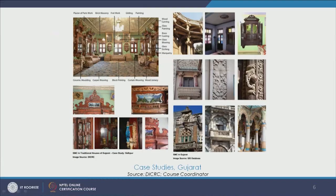Then we saw a few buildings from Gujarat — some space-making crafts and interior architecture examples. We specifically saw one from Sidpur and saw how in this one small space itself there are so many craft forms and techniques employed: plaster of Paris work, brick masonry, fret work, gilding, painting, wood carving, glass painting, brass casting, glass blowing, glass etching, marquetry work, ceramics, carpets, upholstery, curtains, and wood joinery — all these different materials and techniques creating this space.